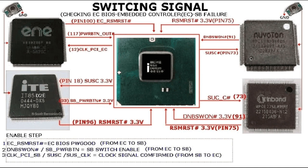CPU Communication. Chipsets manage communication between the CPU and other system components, including memory, storage devices, expansion cards, and peripherals. This communication ensures that data can be exchanged efficiently between the CPU and other parts of the system. Memory Access. Chipsets include memory controllers that regulate access to system memory (RAM). These controllers coordinate read and write operations between the CPU and memory modules, ensuring data is transferred accurately and efficiently.